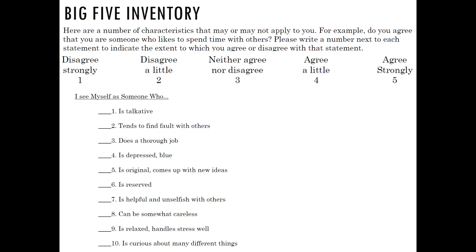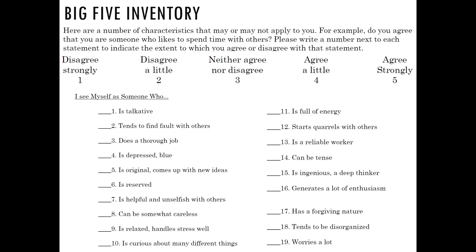Eleven: is full of energy. Twelve: starts quarrels with others. Thirteen: is a reliable worker. Fourteen: can be tense. Fifteen: is ingenious, a deep thinker. Sixteen: generates a lot of enthusiasm. Seventeen: has a forgiving nature. Eighteen: tends to be disorganized. Nineteen: worries a lot.